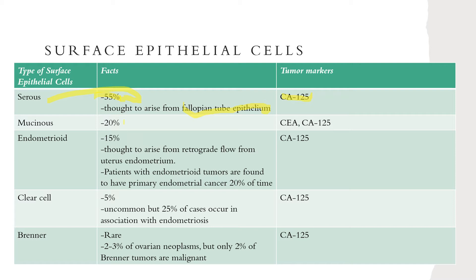Mucinous makes up about 20 percent and is the surface epithelial cell tumor type that can have elevations of both CEA and CA-125. Endometrioid is 15 percent of the overall makeup. It is thought to arise from retrograde flow from the uterine endometrium, and patients with endometrioid ovarian primary cancer may also have endometrial disease. Twenty percent of the time, another primary endometrial cancer is found at time of diagnosis, and these patients will also have elevated CA-125.